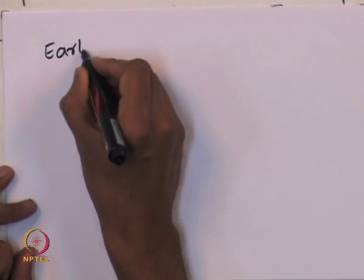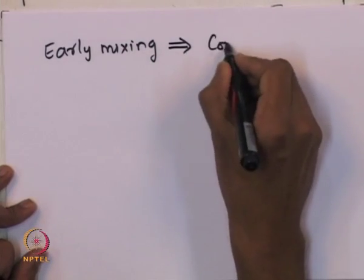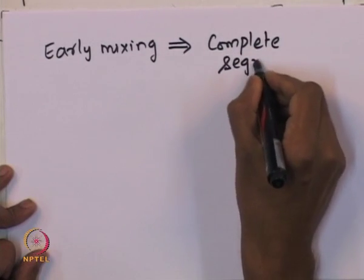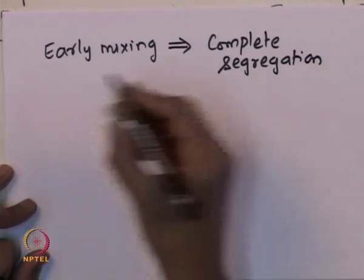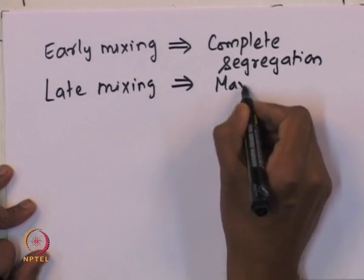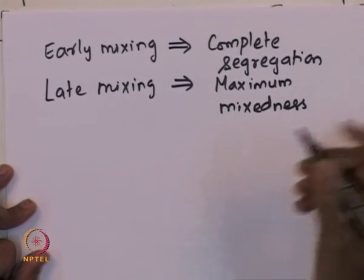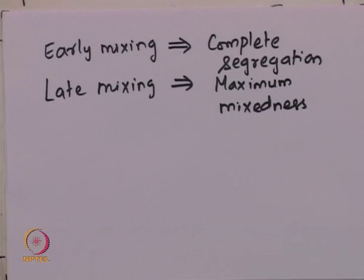These two extremes represent early mixing and late mixing regimes. The early mixing extreme is represented by the complete segregation model, while the late mixing extreme is represented by the maximum mixedness model. These two extremes essentially represent the two levels of mixing of the macro fluid globules that we defined in the last lecture. Let us look at the first one: the segregation model of a reactor.